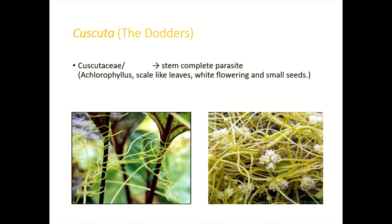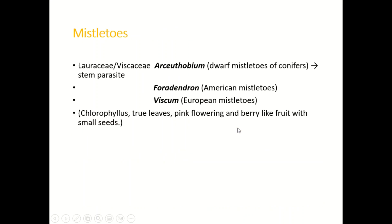For example, Cuscuta — the dodders — are very important phanerogamic parasitic plants. These are stem complete parasites, so they are achlorophyllous and do not have chlorophyll. They have scale or thread-like leaves, white flowers, and small seeds. Here you can see a picture of the dodders showing flowers which contain small seeds.